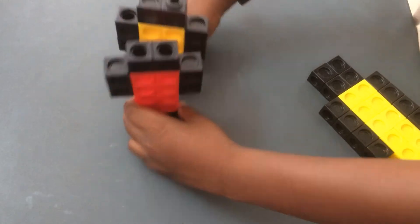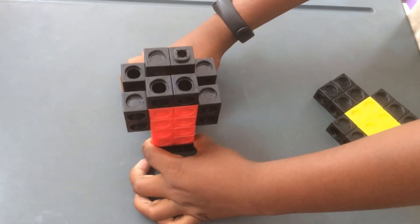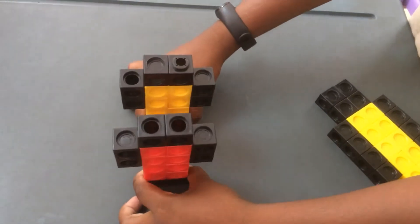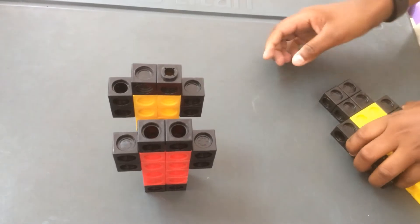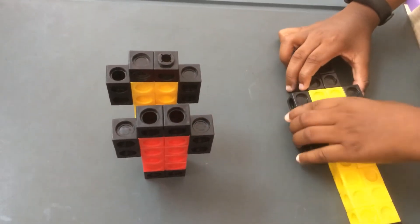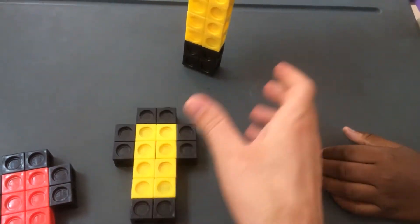So there were two robots fighting. They couldn't beat each other because they are the same size. So the yellow robot called a robot which is the double size of him. So it came. So if we look at these two, yeah.